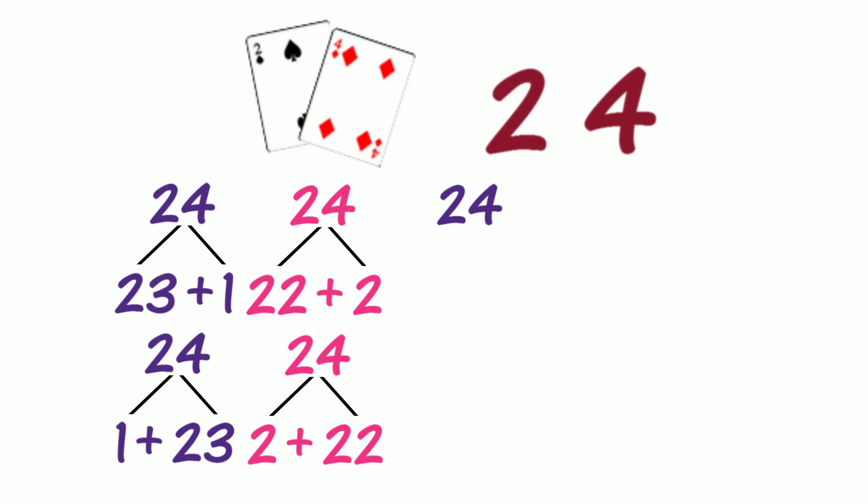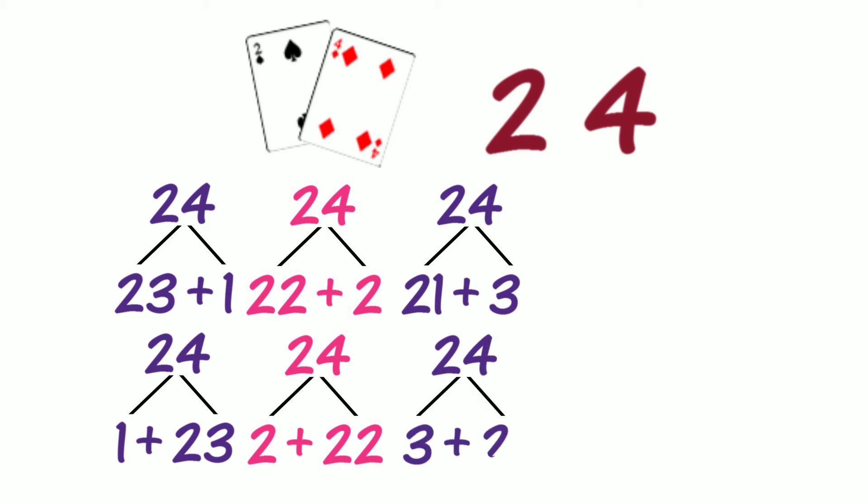Let's put the tower back together again. How else could we partition 24 into two parts? Could we partition into 21 and 3? Let's record this partition. If the parts swap places, what other partition do we know? Do we know 3 and 21? Is this the same partition? Did we partition 24 into place value parts?